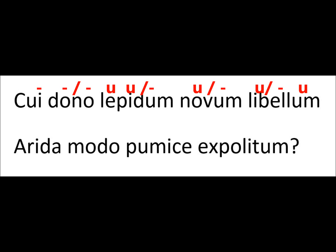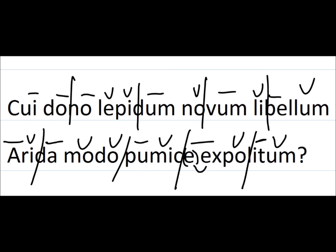Then you can fill in what else you need. The O in 'dono' is long by nature when you look it up. So the full pattern reads: long, long — break — long, short, short — break — long, short — break — long, short — break — long, short. Then you would read it: 'Cui do-no le-pi-dum no-vum li-bel-lum' — very rhythmic like that.